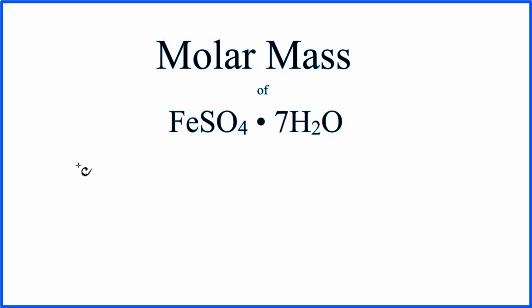We look up iron on the periodic table, that's 55.85 grams per mole, and I won't write grams per mole until the end here, it gets a little tedious. Plus sulfur, 32.07 grams per mole. Oxygen is 16.00 grams per mole, we have four oxygen, so let's multiply that by four.